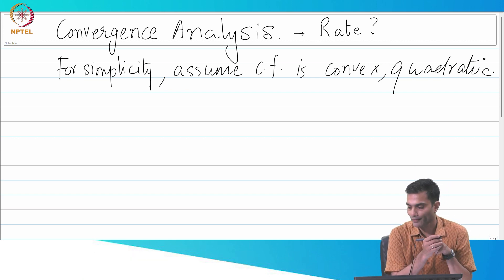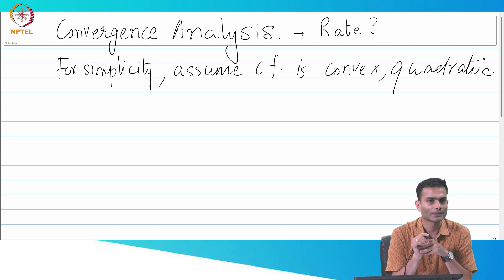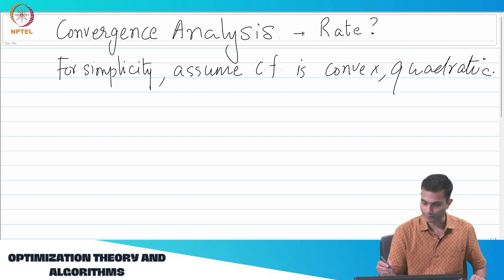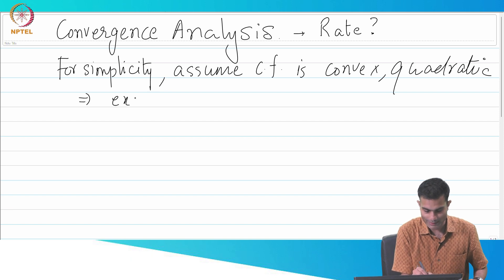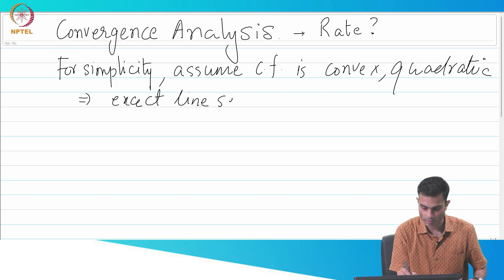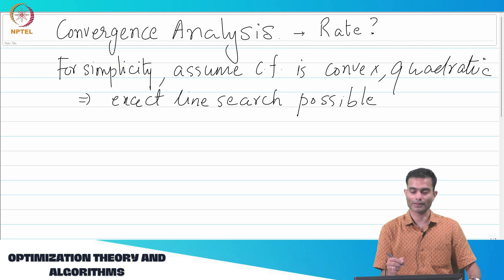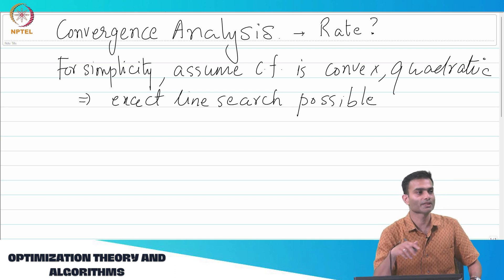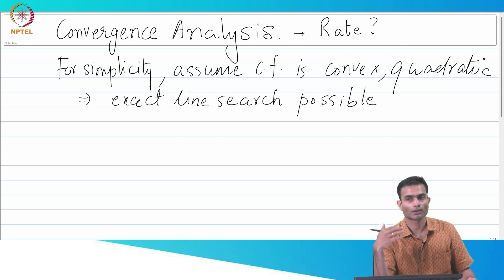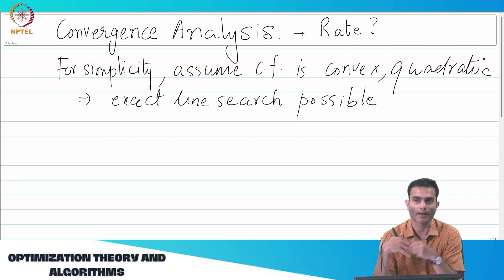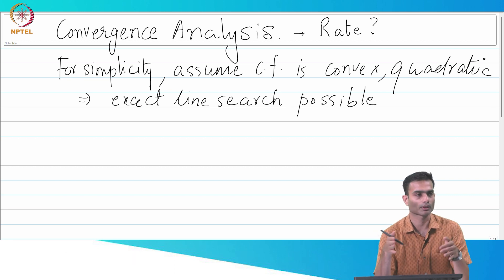So for simplicity, assume f is cost function is convex and quadratic. One of the advantages of having a quadratic cost function is that I can actually do line search exactly. This is I believe one of the tutorial questions as well. So I can do exact line search is possible. It's a simple matter of calculus to show this. Exact line search means I actually have a closed form expression for the step length. So that's great because it helps me with the analysis. I don't have to do backtracking line search, I don't have to check for Wolfe conditions. I can just get an expression at each k, this is the step length, walk along it.